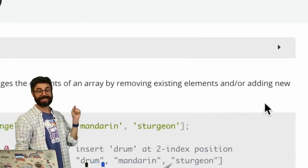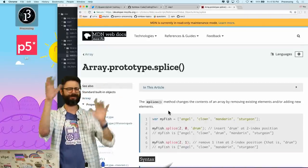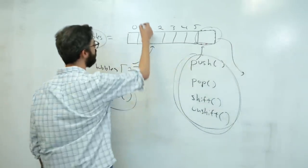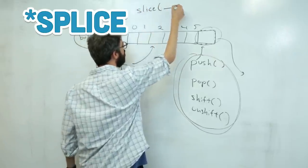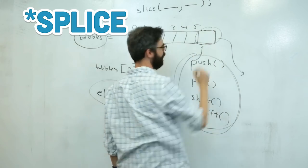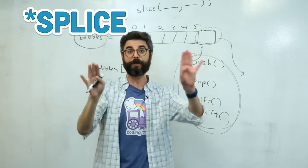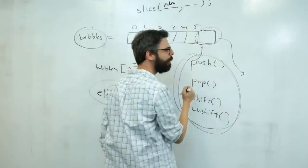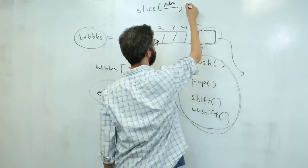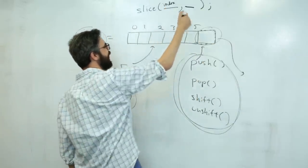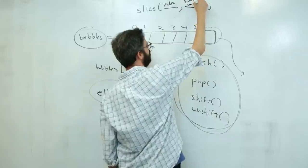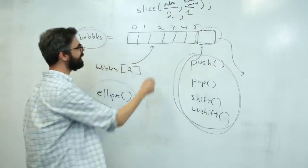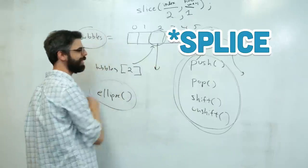Wouldn't it be nice if it were just called 'delete' or 'remove'? But the one I'm looking for is splice. This method changes the contents of an array by removing existing elements and/or adding elements. I want to use it for deletion. Splice takes two arguments — the first is an index, the second is how many. So if I say splice(index, 1) it removes just that one element.